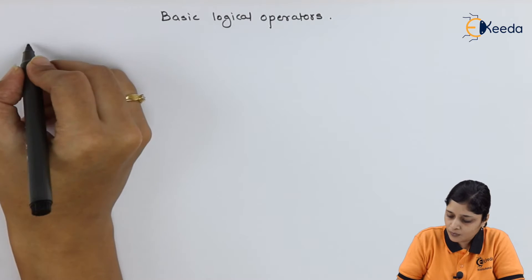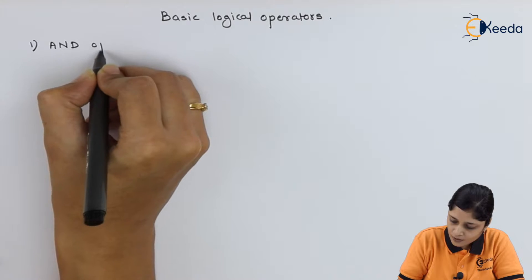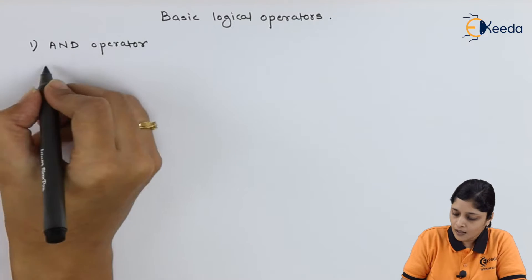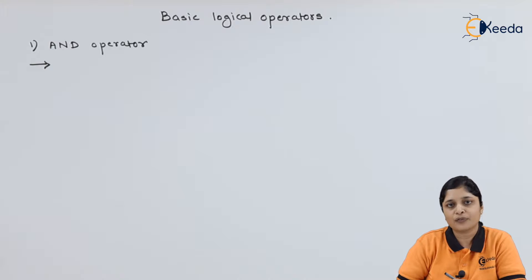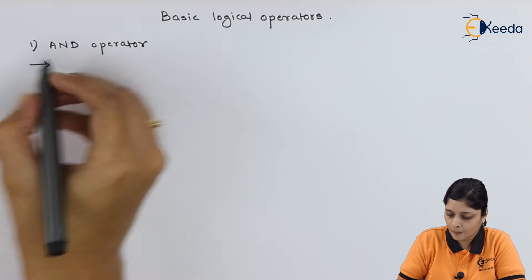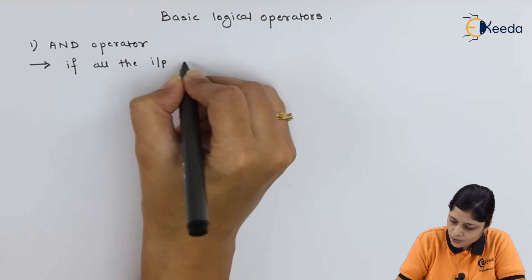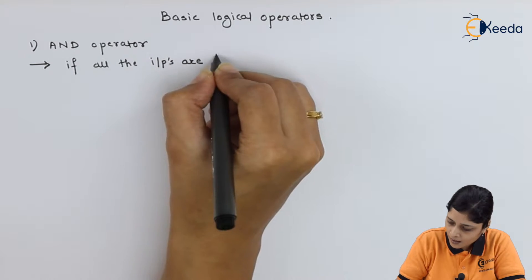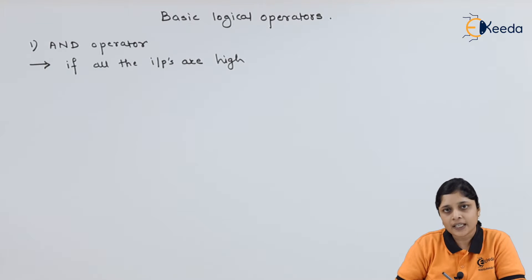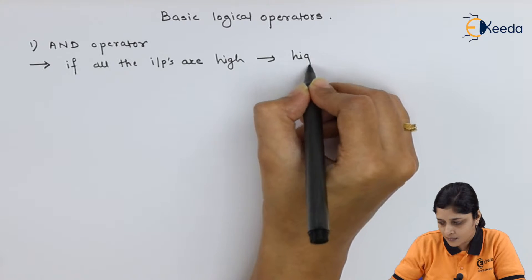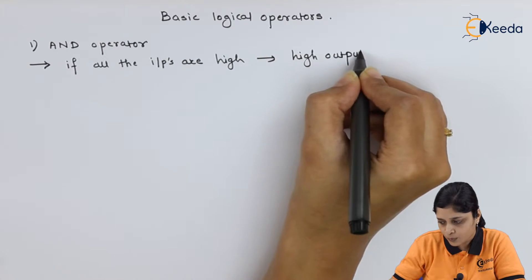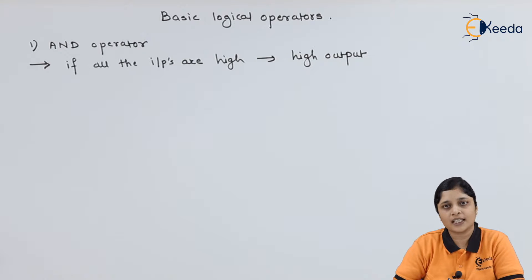We will focus on the first operator, that is the AND operator. Now, there are some characteristics of AND operator. AND operator produces high output only if all the inputs are at high level. This means if all the inputs are high, then only you will get high output. Otherwise, you will not get high output. This is the main feature of AND operator.